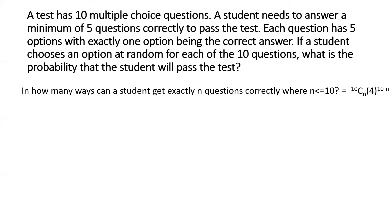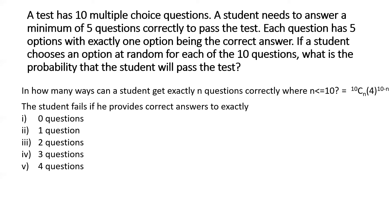So now we have figured out in how many ways a student can get exactly n questions correctly. We need to consider two things. When can a student pass? I'll start by considering the other way around which might be simpler just from the standpoint of calculating the probability, which is in how many ways can a student fail the test.